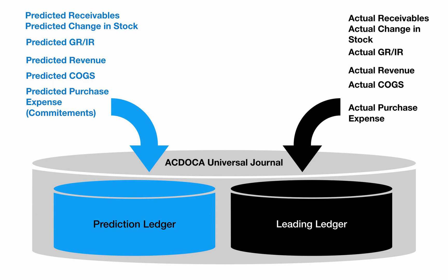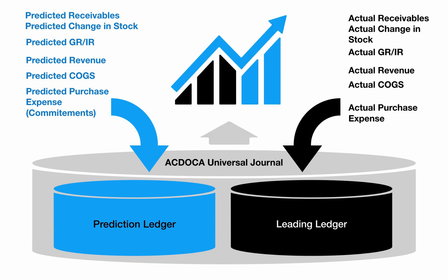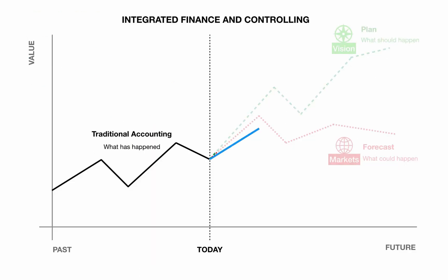The integrated data model in SAP S/4HANA can help to overcome these problems. The predictive accounting solution is now the single source of truth for accountants and controllers. Combined with traditional accounting, it enables them to see where they have been, where they are now, and where they are going in the future, with no extra effort for forecasting and planning.